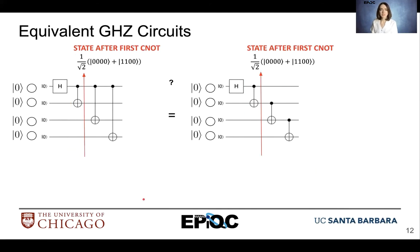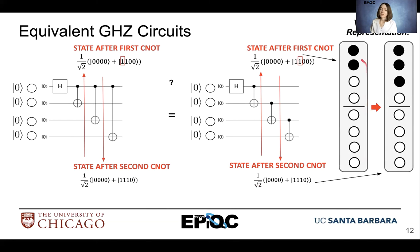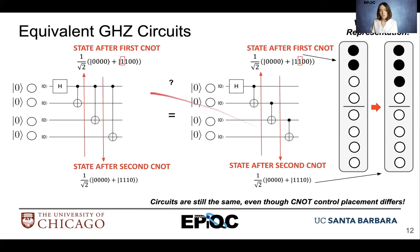Now let's see what happens when we pass through that third CNOT gate. This is where our circuits appear a little different: in one, the top qubit is acting as control, and in the other, the second qubit is acting as control. We can see the control qubits highlighted in the second basis state. After the second CNOT, we have all zeros in the first basis state and three ones and a zero in the second basis — and we get the same result in both circuits. Even though the CNOT control placement differs, the output is the same after the second CNOT.